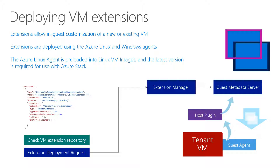A few more details around extensions. We have a set of extensions that allow us to configure services within the VM from the outside, for example during deployment — like BGinfo, Windows Defender, and some third-party tools. The process checks the VM extension repository, requests an extension from the extension manager, and at the end of the day the tenant VM — using the guest agent — talks to the host plugin, which talks to the guest metadata service to configure something within the VM.